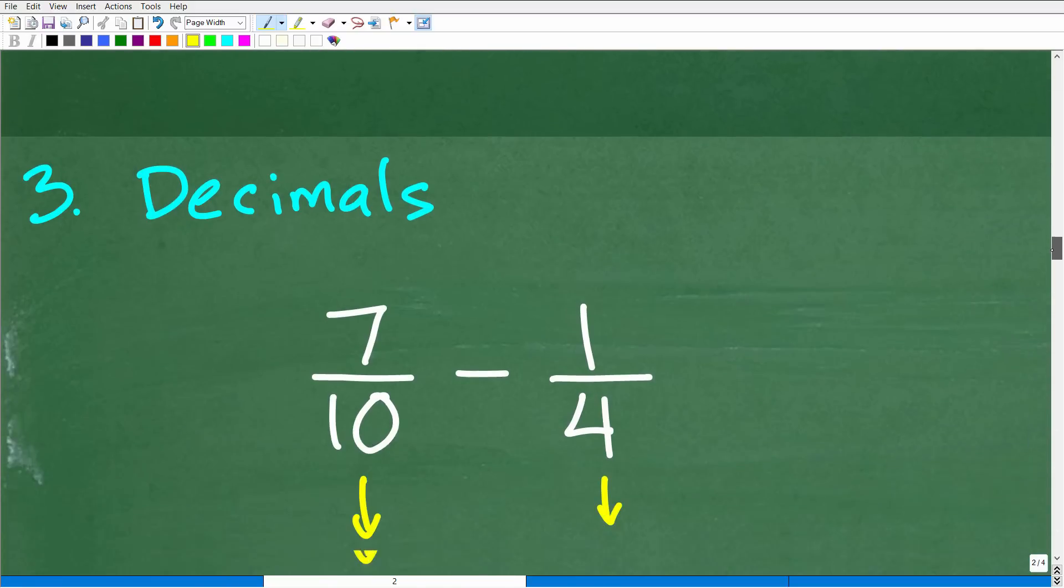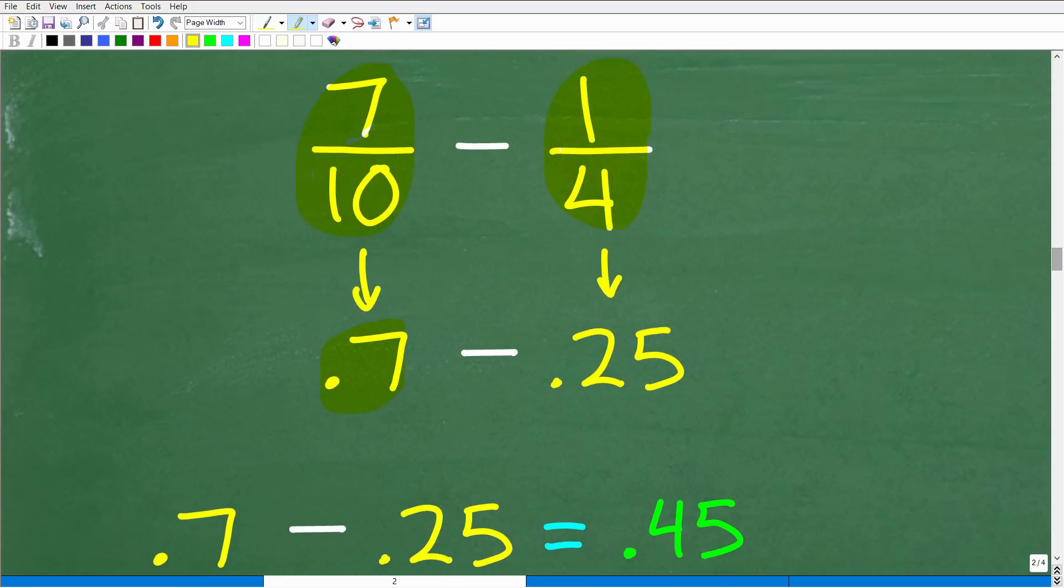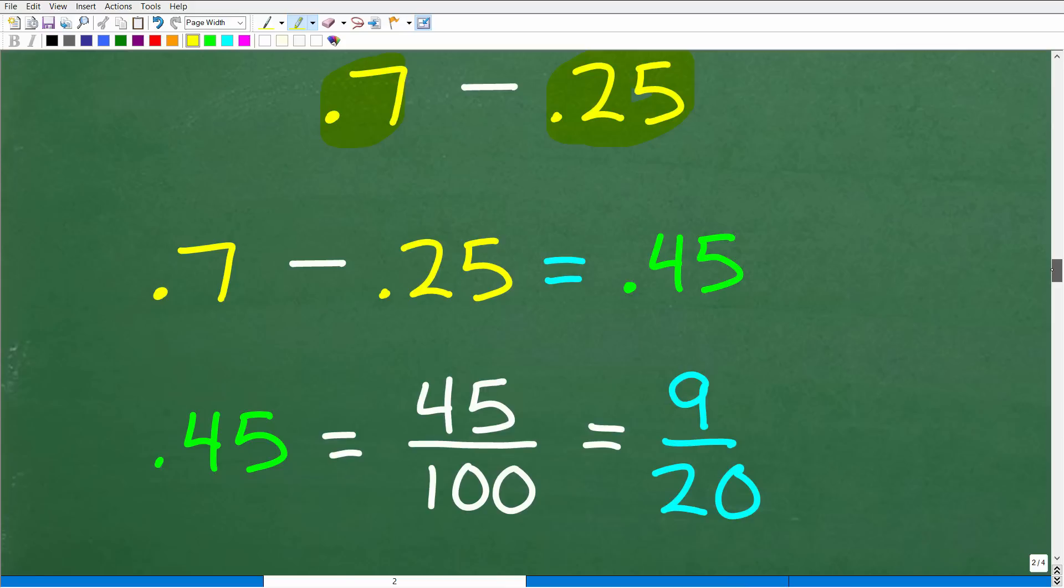So what's the third way you can do this? You can use decimals. If you have your calculator handy, you could just take 7 divided by 10, or you could see that this is 7 tenths, or 0.7. And then 1 fourth here is the same thing as the decimal 0.25. You could use your calculator, or if you know how to subtract decimals, you can do this as well.